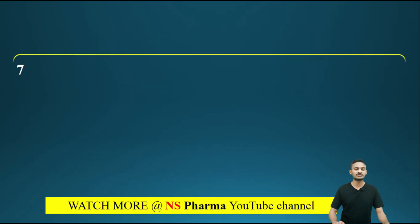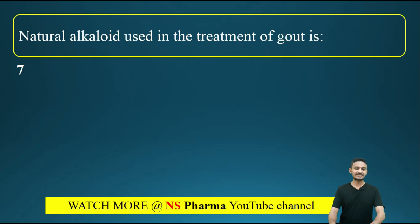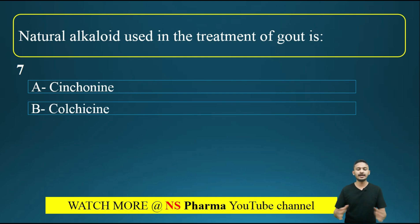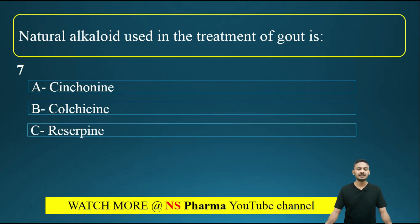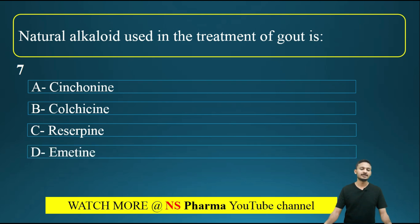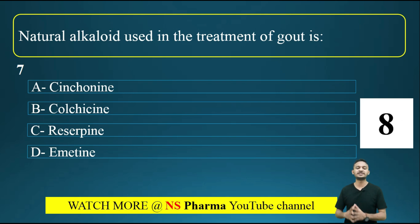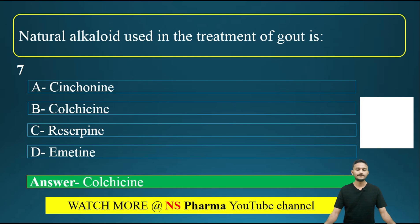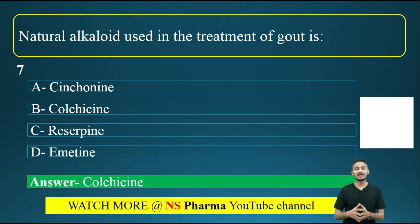Question number 7: which natural alkaloid is used in the treatment of gout? Options are: option A, cynogenin; option B, colchicine; option C, reserpine; option D, emetine. The correct answer is option B, that is colchicine. This is studied in pharmacognosy as well as pharmacology. Colchicine is used for the treatment of gout.